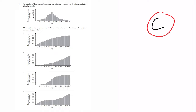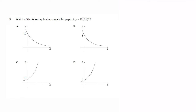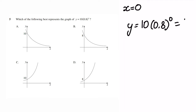The multiple choice options have different y-intercepts and slope in different directions — those are the two things I'll test. To find our y-intercept, make x equal to 0. Substituting into y equals 10 times 0.8 to the power of 0: anything to the power of 0 is 1, so y equals 10 times 1, which is 10. That means our answer is either A or C.